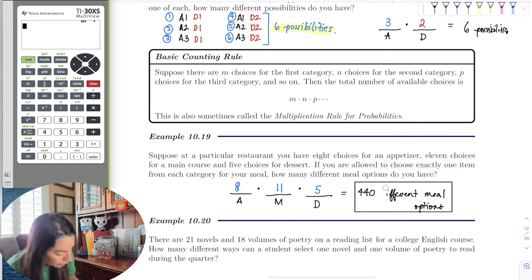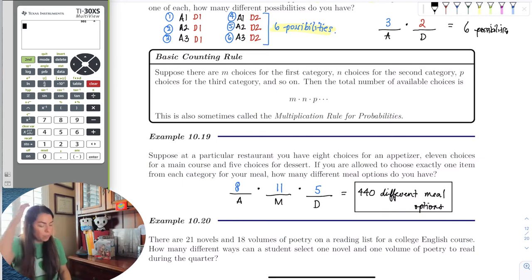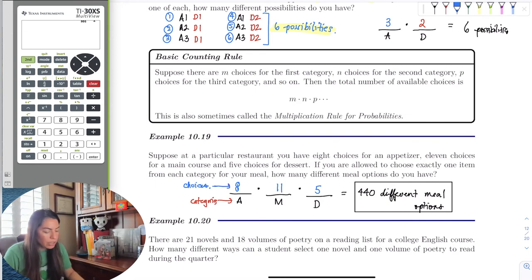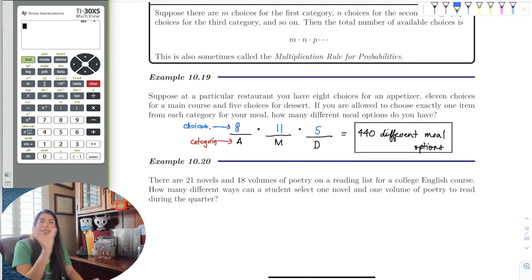So when we have the category, let me label this. Down here are the categories and up here are the selections or the choices that we have. So now, as long as I can identify the categories and then the choices, I can know what I need to multiply.